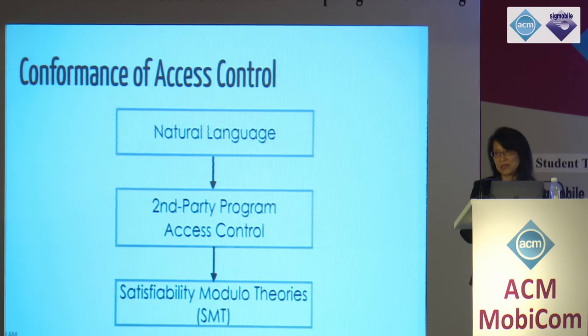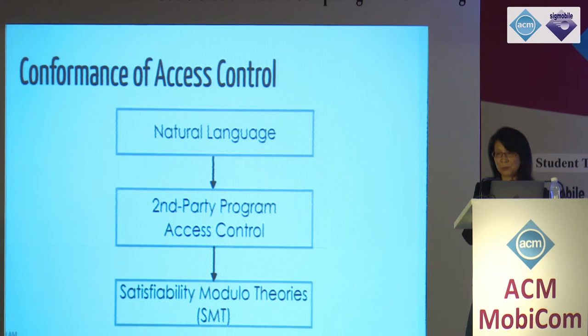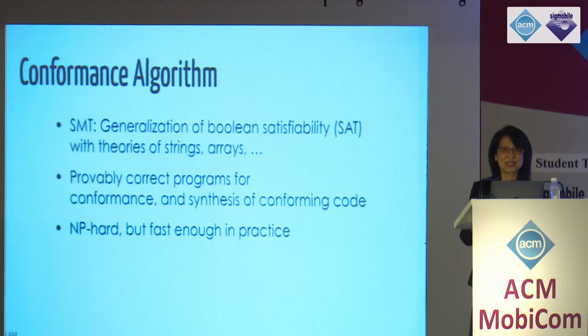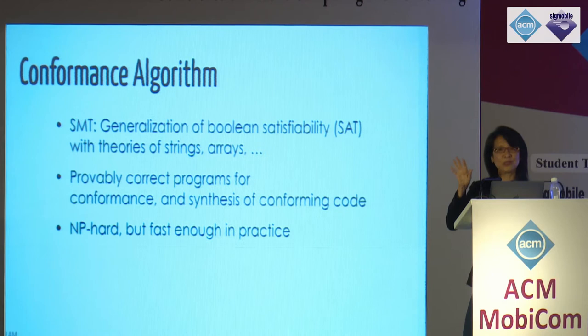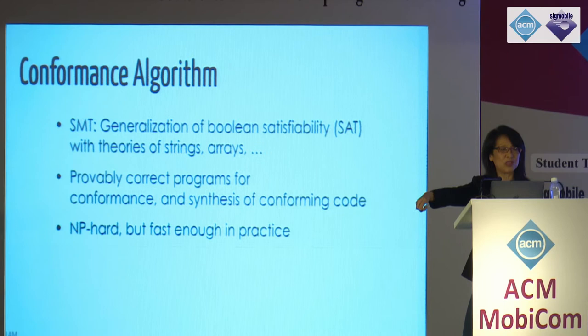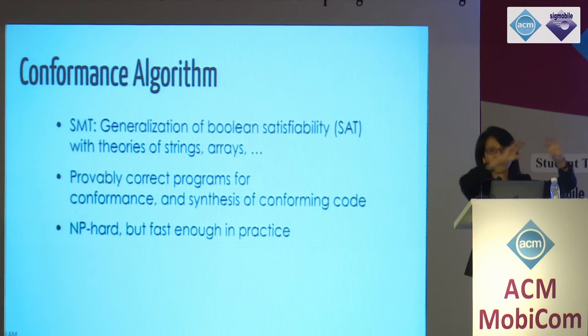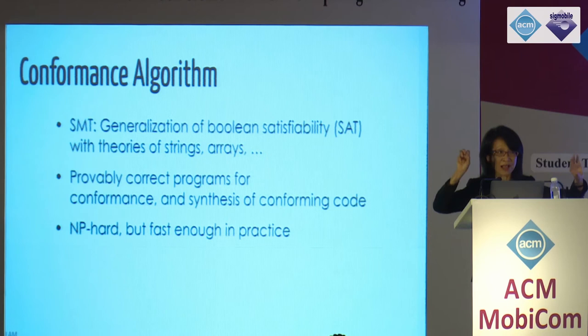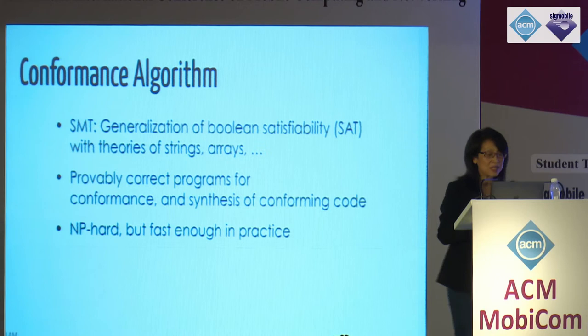How do we implement conformance? We translate natural language into ThinkTalk code, then lower it down to SMT — Satisfiability Modulo Theories formulas. SMT is a generalization of Boolean Satisfiability with theories of strings, arrays, and so forth. There are plenty of well-tuned, optimized libraries. All we have to do is map the conformance problem to a library function, so we know it's provably correct. Even though we are working with natural language, we are dealing with something that has very formal semantics. SMT is NP-hard, but our experiments show it is fast enough.